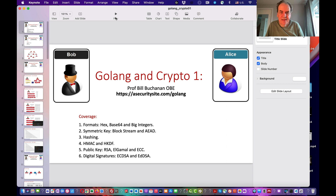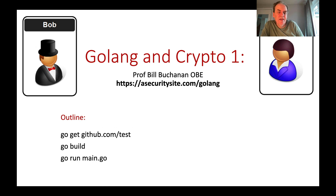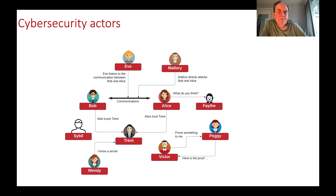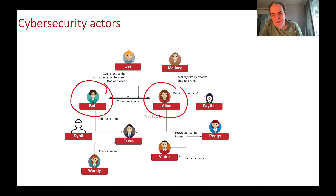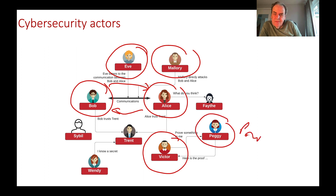The core commands you'll use are 'go get' to fetch a library, 'go build', and then 'go run'. In cybersecurity we define actor roles: Bob and Alice, whose communications we want to keep secure. We might also want to prove Bob's identity to Alice and vice versa. Unfortunately we have Eve and Mallory as malicious actors. We also have Peggy as a prover and Victor as a verifier, used in areas such as zero-knowledge proofs.